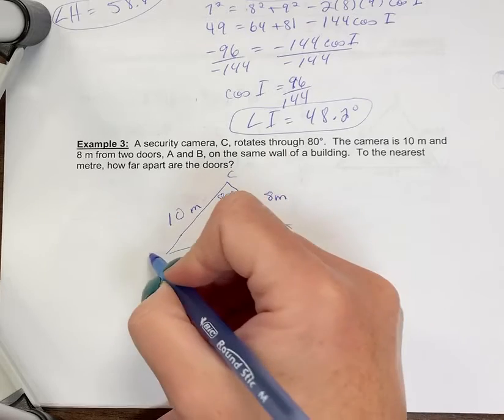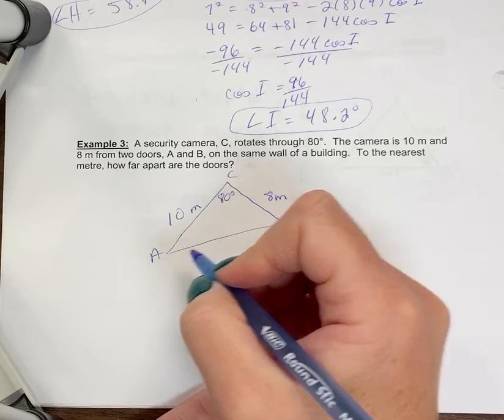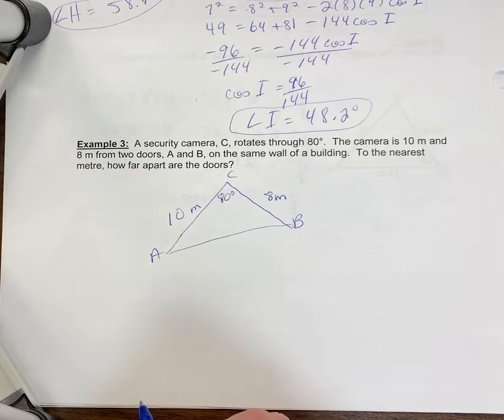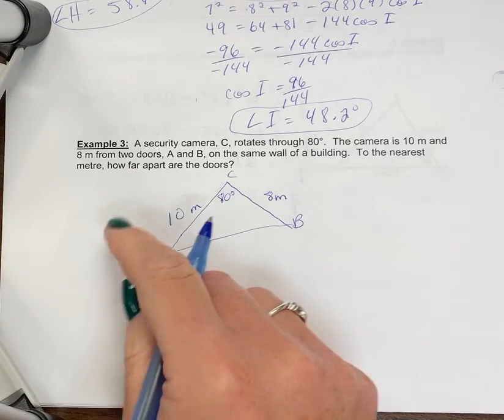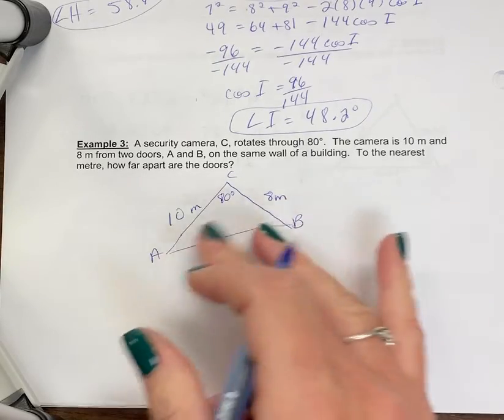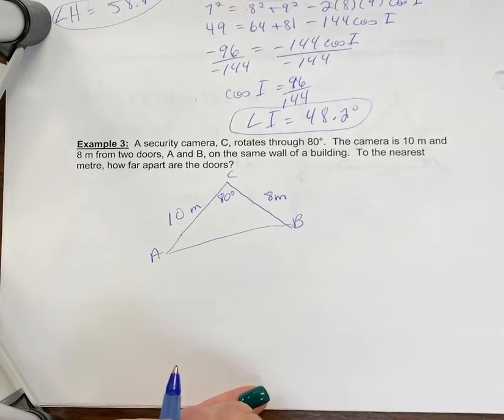So we'll label this A and B. Doesn't really matter what way you label them. One door's A, one door's B. If you put these the other way around, not going to make a big difference.